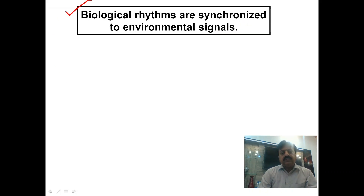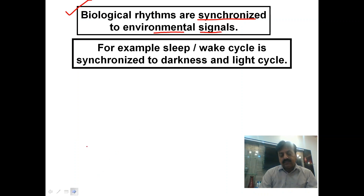Biological rhythms are synchronized to environmental signals. The word synchronized means connected to environmental signals — those signals may be light or darkness. For example, the sleep-wake cycle is synchronized — meaning connected — to the darkness and light cycle. Darkness causes melatonin hormone to rise, and light causes it to decrease.